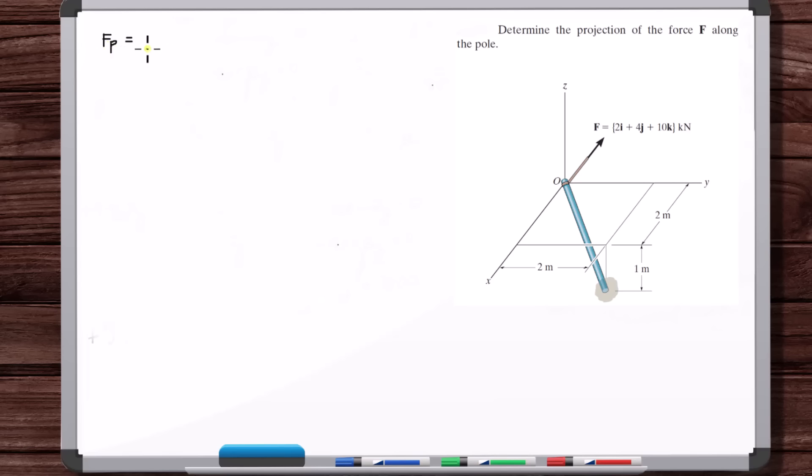And so if we want just that magnitude, what do we do? We take F, the vector F, and dot it with a unit vector along the direction of the pole. So we just need to determine the unit vector along the direction of the pole, and then we'll do F dot that unit vector, which is easy. Dot products are easy once you have the vectors.